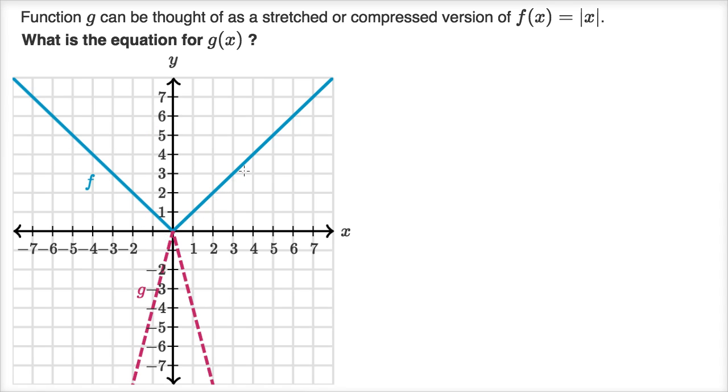So you can see f(x) equals the absolute value of x here in blue, and then g(x), not only does it look stretched or compressed, but it also is flipped over the x-axis. So like always, pause this video and see if you can come up yourself with the equation for g of x.